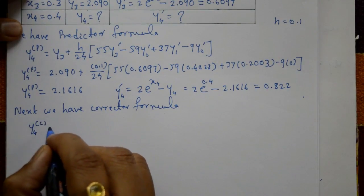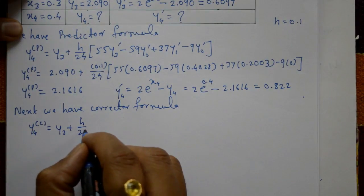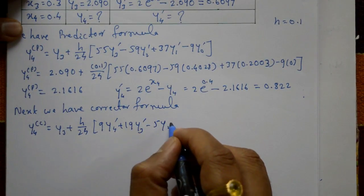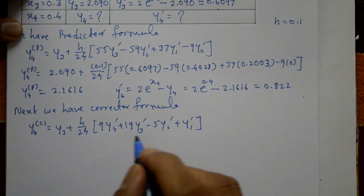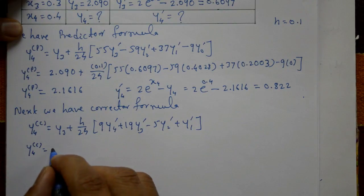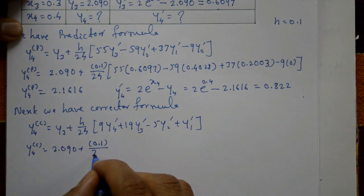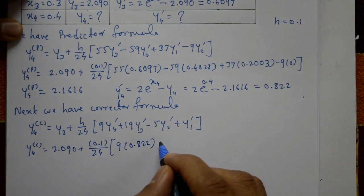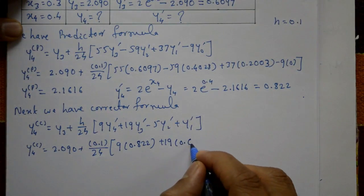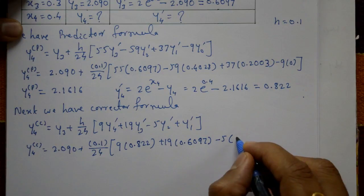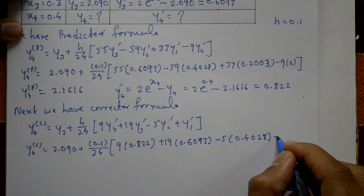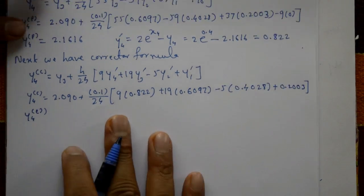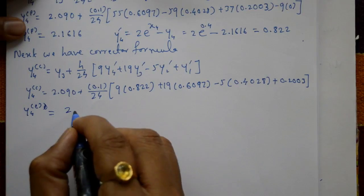The corrector formula is: y4_c equals y3 plus h over 24 into (9 y4-dash plus 19 y3-dash minus 5 y2-dash plus y1-dash). Substituting: y3 = 2.090, h = 0.1, 9 × 0.8222 plus 19 × 0.6097 minus 5 × 0.4028 plus 0.2003. The corrector formula gives y4_c equal to 2.1615.